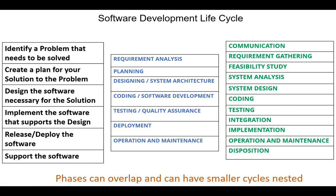Phases included in the software development lifecycle vary from model to model. There are different examples of the lists included in the phases. Here, in the first list, we have the following phases: identify a problem that needs to be solved; create a plan for your solution to the problem; design the software necessary for the solution; implement the software that supports the design; release and deploy the software; and support the software.